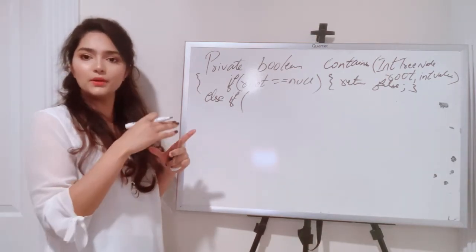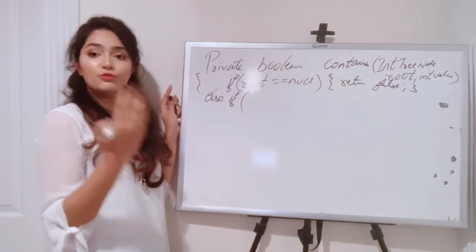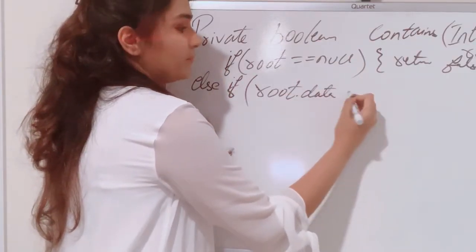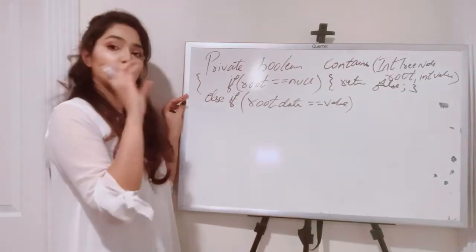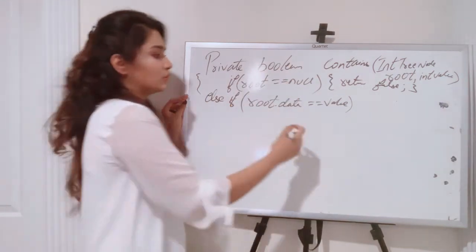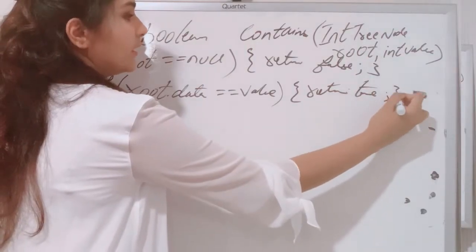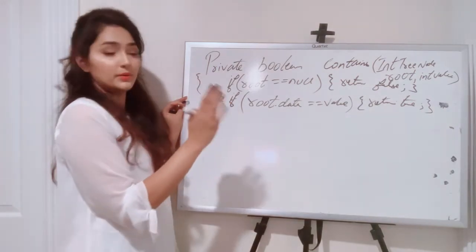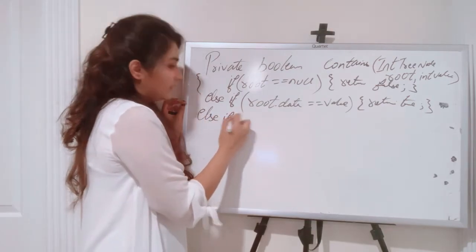Instead of skipping the root and going directly to search, we first check the root itself. So the next condition is: else if root.data equals value. If the root is the value which the user is looking for, since we are returning a boolean, we return true.